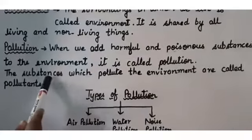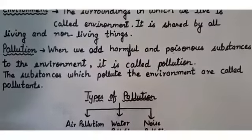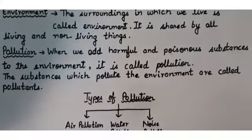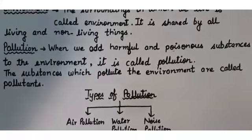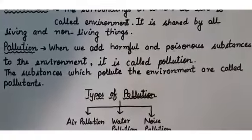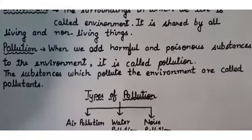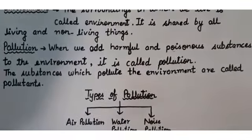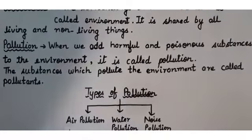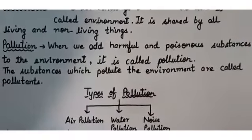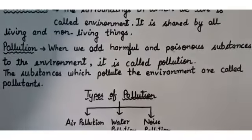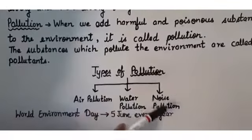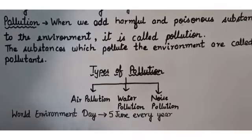The substances which pollute — the things which are polluting the environment — are called pollutants. Now there are many types of pollution caused by human activities. The common types of pollution are: number one, air pollution; number two, water pollution; and number three, noise pollution.